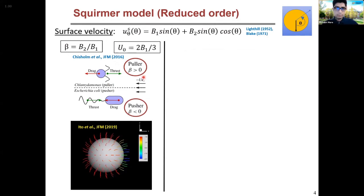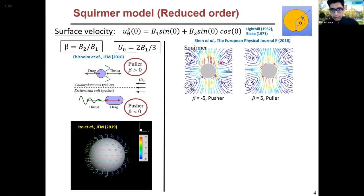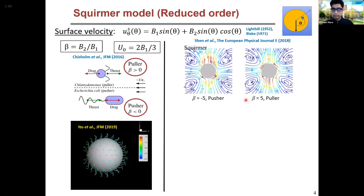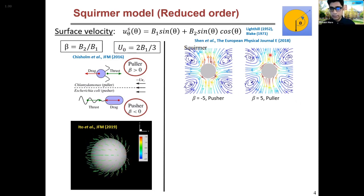Depending on the ratio of two constants called beta, we can classify swimmers as pullers or pushers. A positive beta is a puller and negative beta is a pusher. If we look closely at the flow field around these organisms, for a pusher it seems like it is trying to push the fluid in front and behind it to propel forward. On the other hand, a puller seems like it is pulling the liquid from behind and in front of it to its side so that it can move forward.